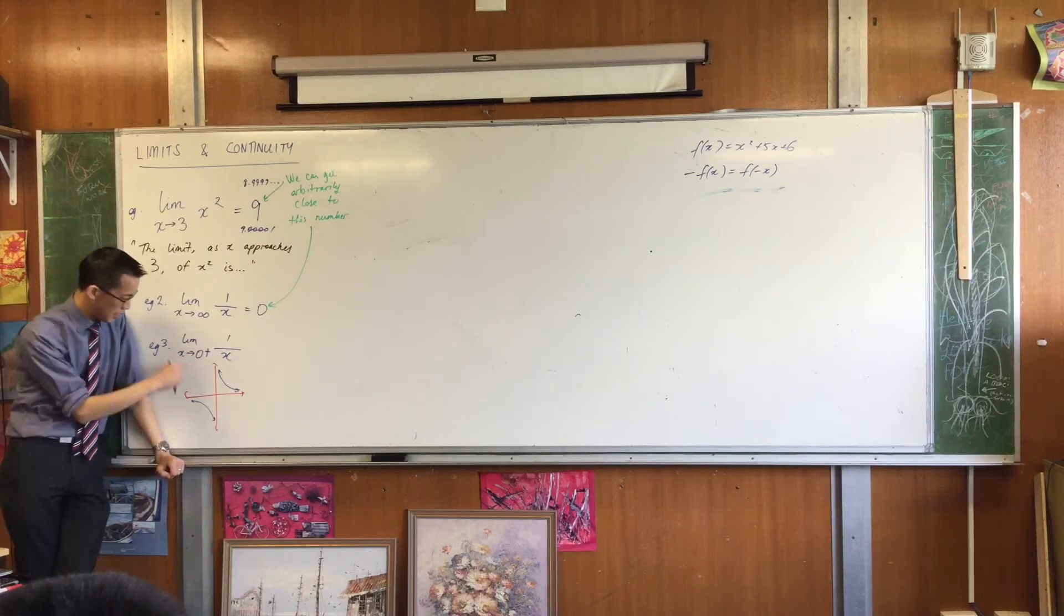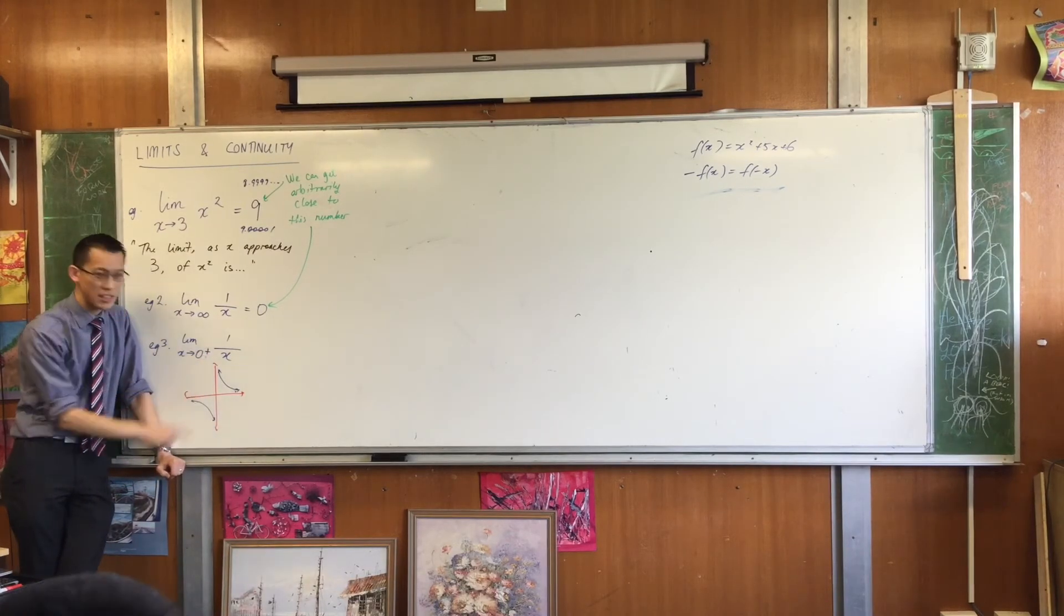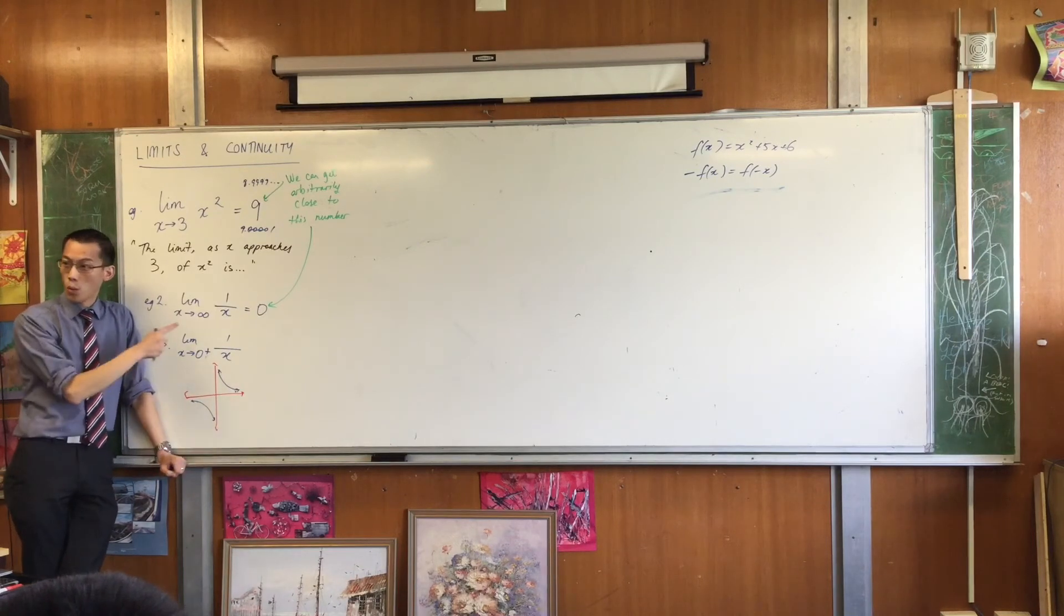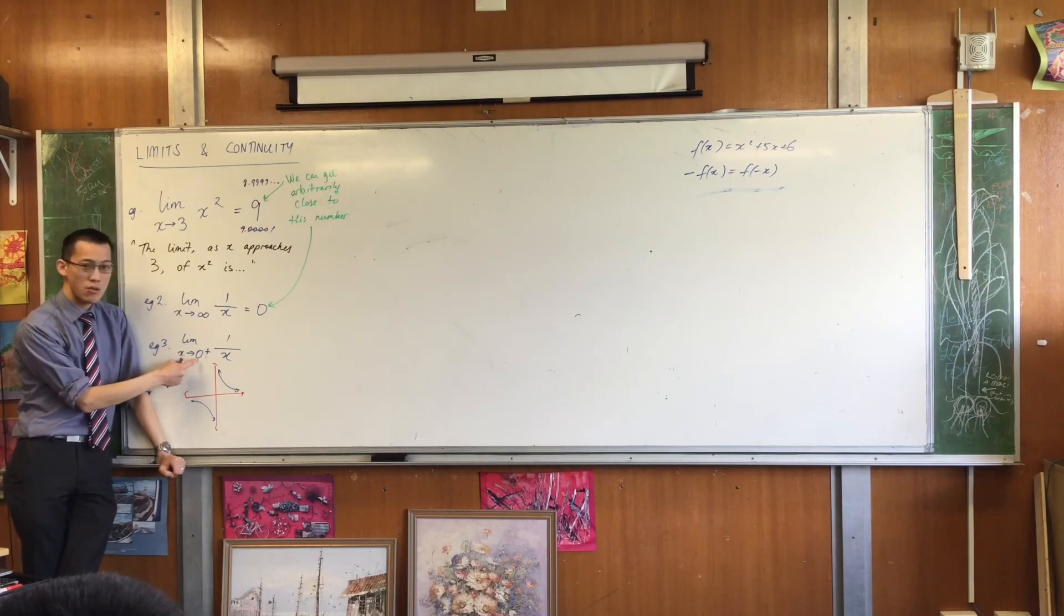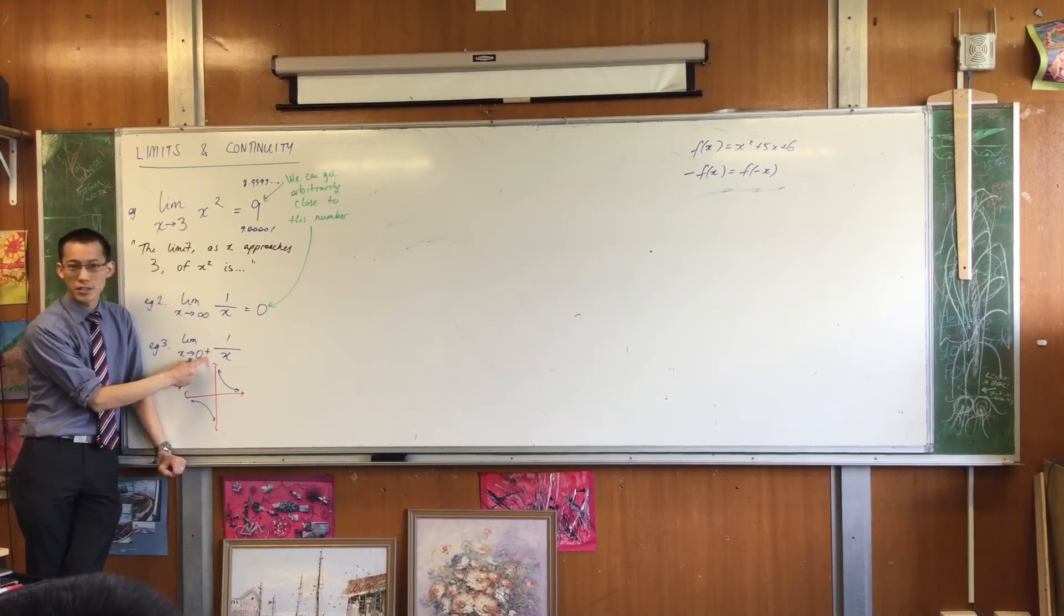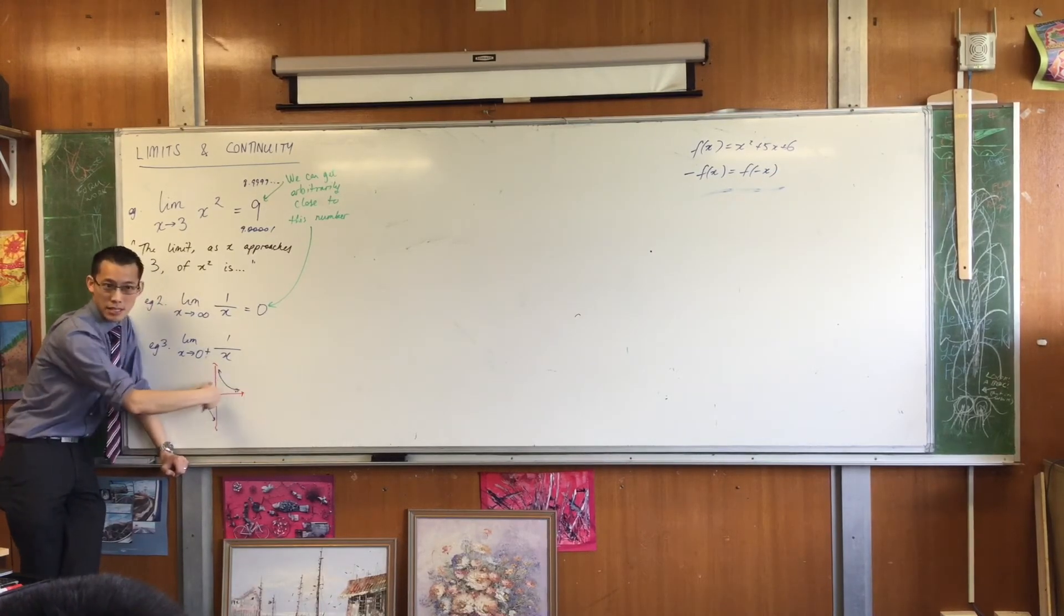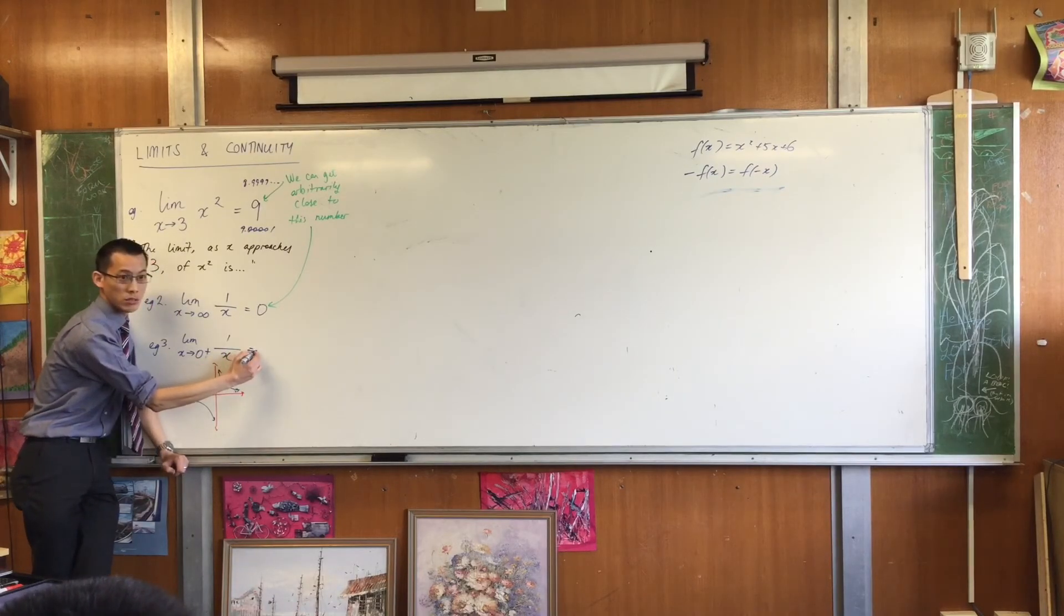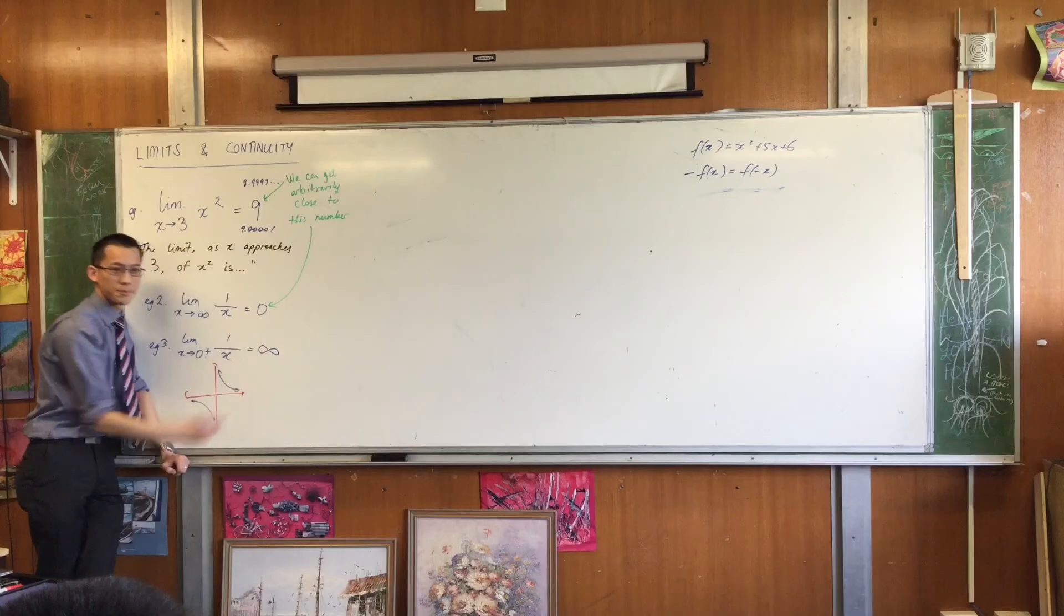When you put a plus sign in the index, right, in the power, as if it were a power, it's not a power, because it's not even a number. What this means is you're approaching 0 from the positive side. That's from right to left. Does that make sense? So this is approaching from the right, so therefore, this is equal to positive infinity.